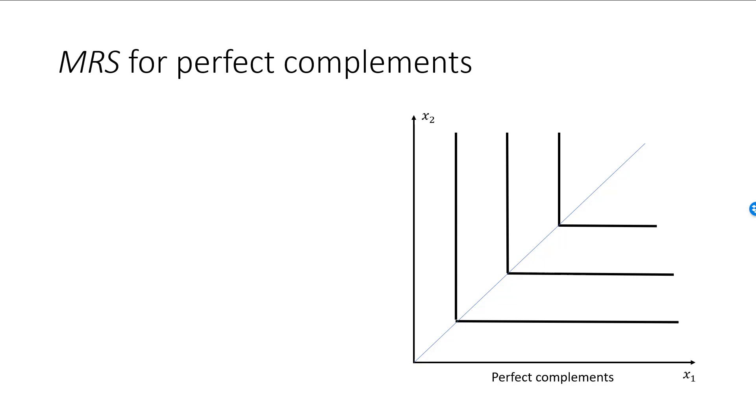On the horizontal part of the indifference curve, not at the corner, good 1 is neutral, while good 2 is neutral on the vertical part.